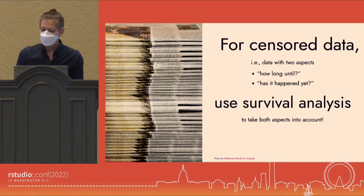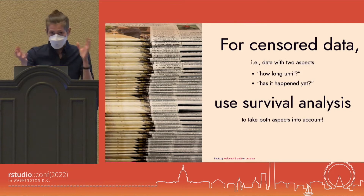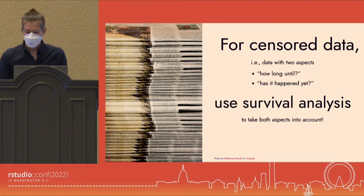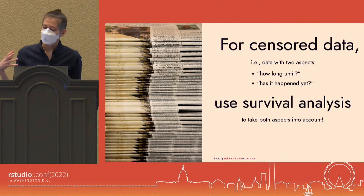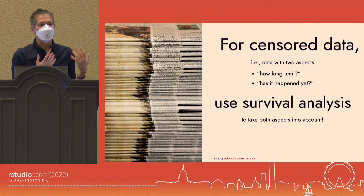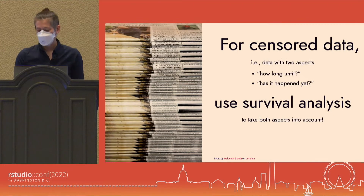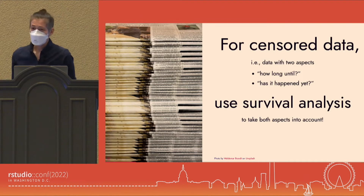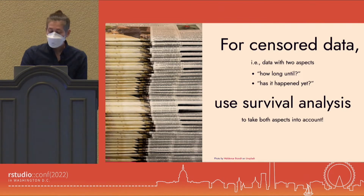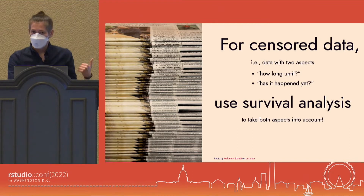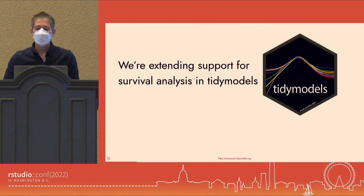If you take that data and put it into a regular regression model without taking the event indicator into account, you're treating observations as complete when in fact they may just be incomplete. And if you drop all your censored observations and model the rest, you're also throwing away information and treating these observations as missing when they are actually just incomplete. Survival analysis is an important field of modeling.